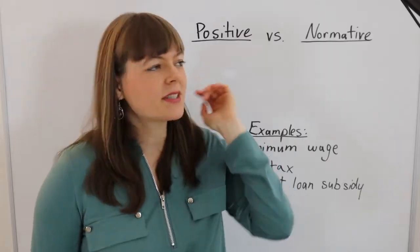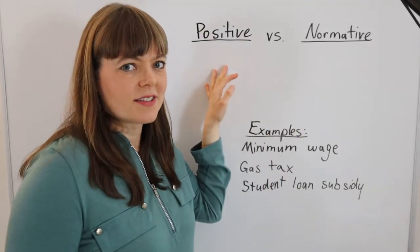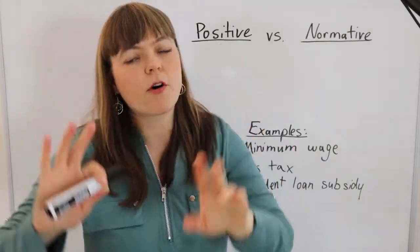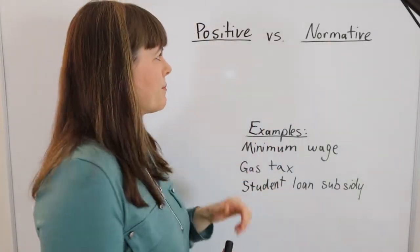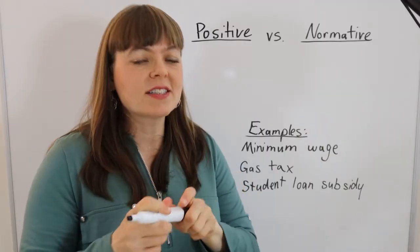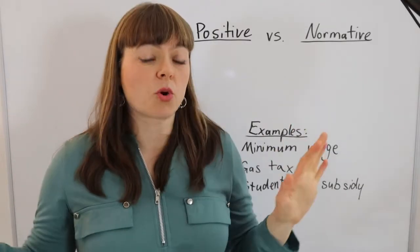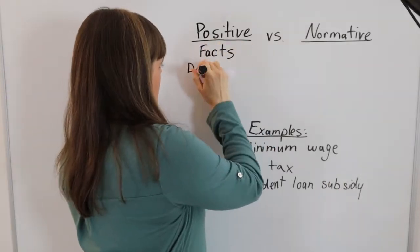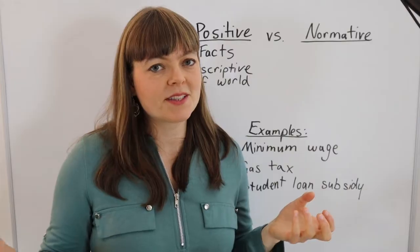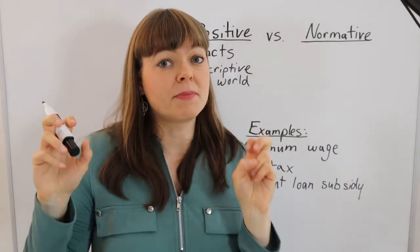Economists like to think of ourselves as going after positive stuff rather than normative stuff. Positive is intended to be just the facts — you're just describing the world as it is. Normative, on the other hand, involves value judgments and statements about what should be.